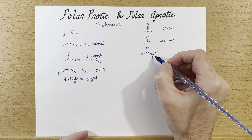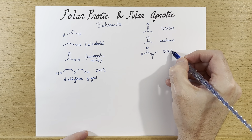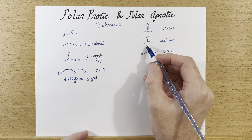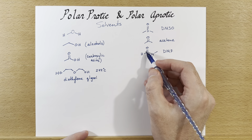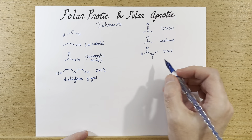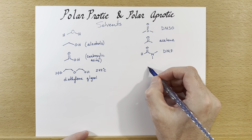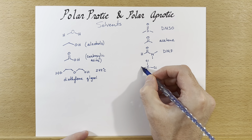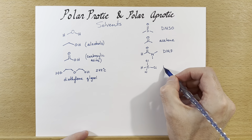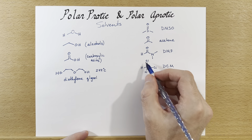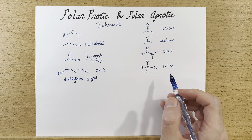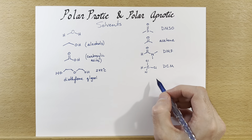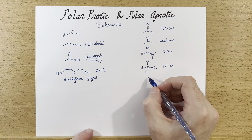Dimethylformamide — DMF — gets its name from formic acid, and it's an amide, so it has a carbonyl with a nitrogen bond. Another polar aprotic solvent is dichloromethane, or DCM. This one gets used fairly frequently, especially in extractions, because it's easy to boil off — it has a relatively low boiling point.